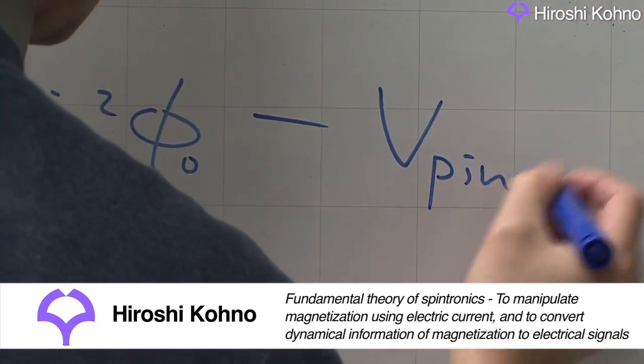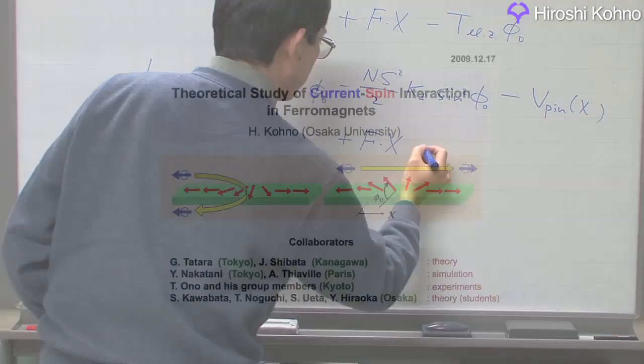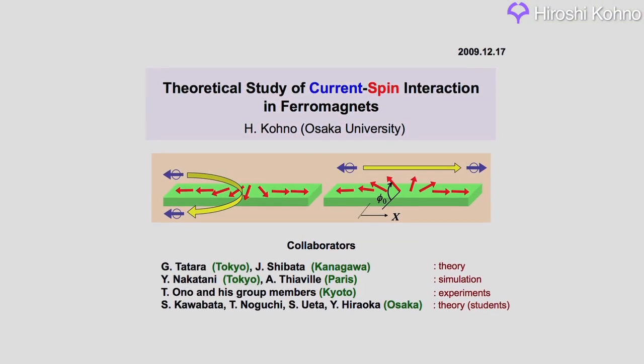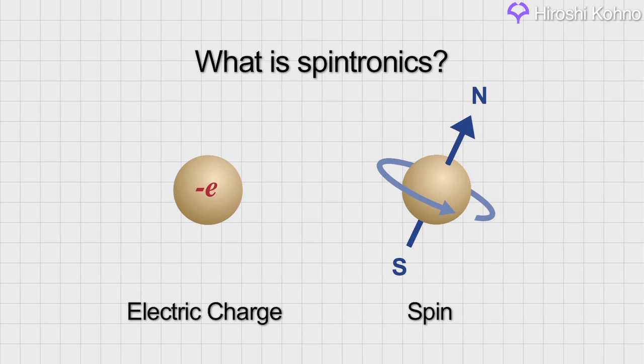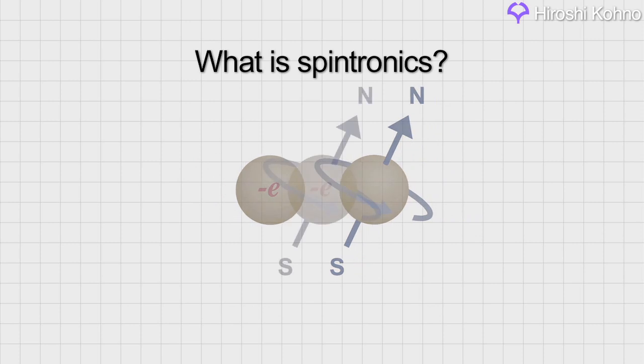Professor Kono at Osaka University is doing theoretical research on spintronics from the viewpoint of fundamental physics. Spintronics uses both the charge and spin of electrons in solids to achieve electronic devices with new capabilities. Research on spintronics is currently very vigorous worldwide.